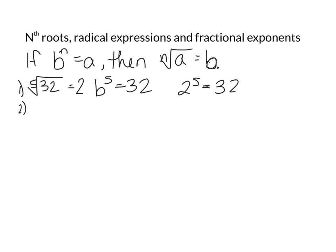Example 2: find the indicated real nth root of a. So it's the cube root of negative 27. Well, our odd roots can be negative because a negative to an odd power ends up being negative. So the cube root of negative 27 is negative 3 because negative 3 to the third power is negative 27.